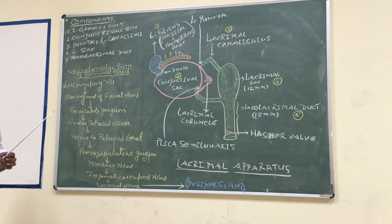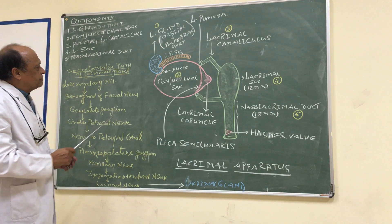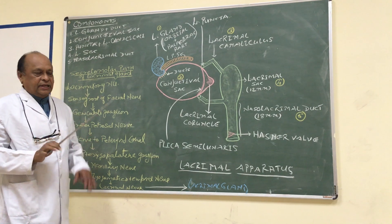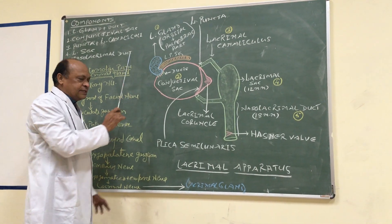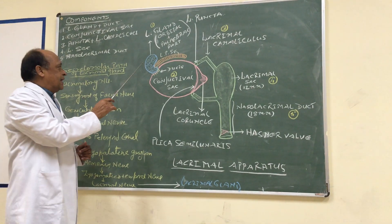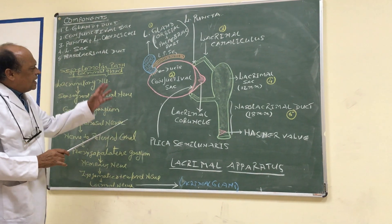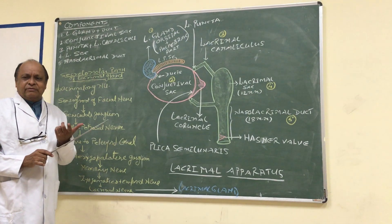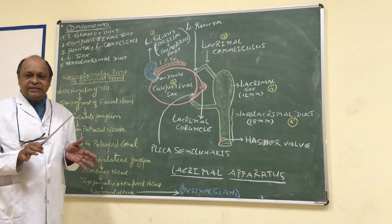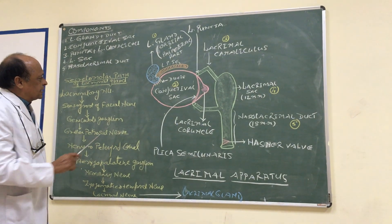Lacrimal fluid serves many functions. A very important role is to keep the cornea moist and clean. Another function is that it kills bacteria, so it has a bactericidal effect. Another very important role is that it provides nutrition to the cornea. And one more function is emotional expression by shedding tears. So there are a number of functions of this lacrimal gland.